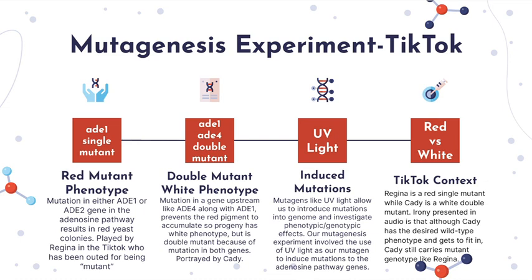Mutations in the last two genes in the pathway, AD1 and AD2, result in the accumulation of P-ribosylamino imidazole, otherwise known as AIR, which is then converted into a red pigment.